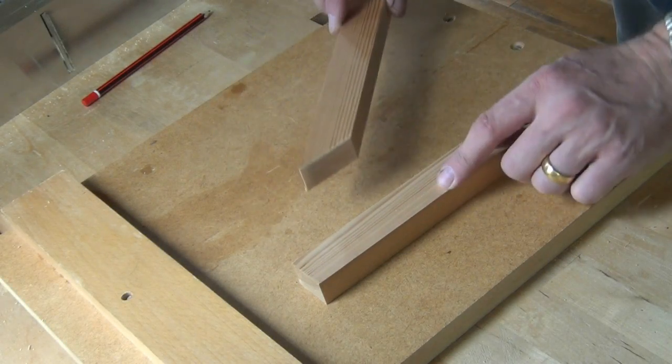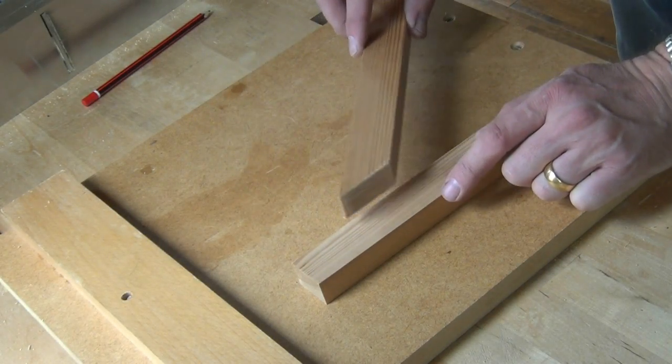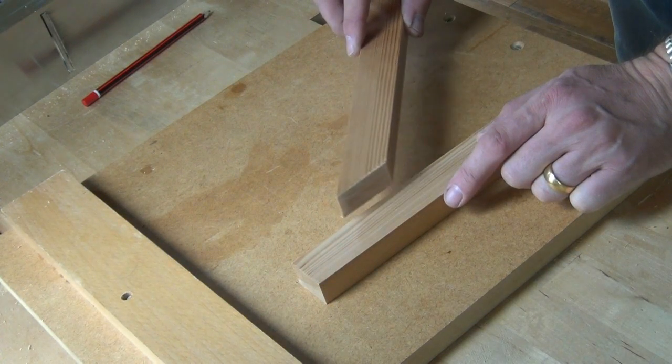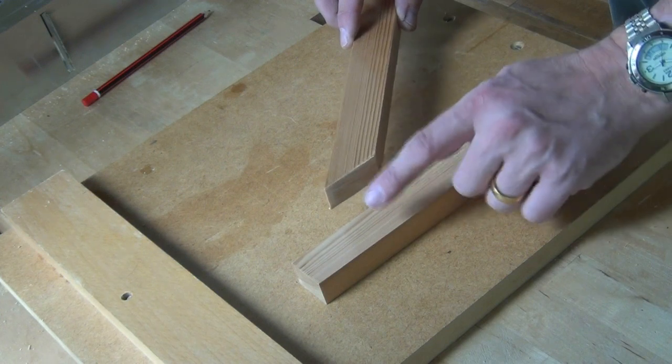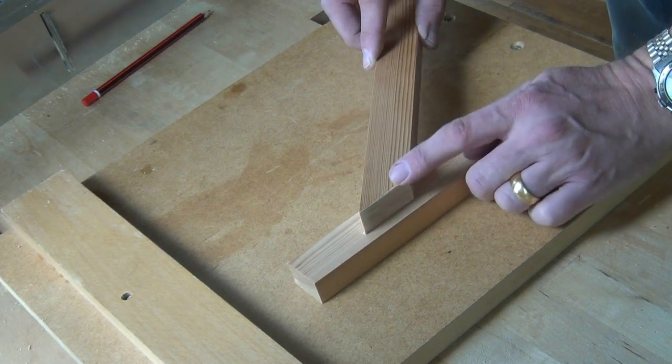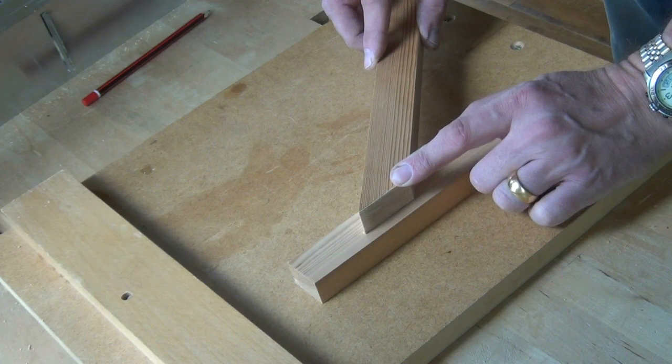So I'm joining this component to this component at a 45 degree angle in this case. So we want to let this end into a mortise cut in the side of this so that components go together like so.